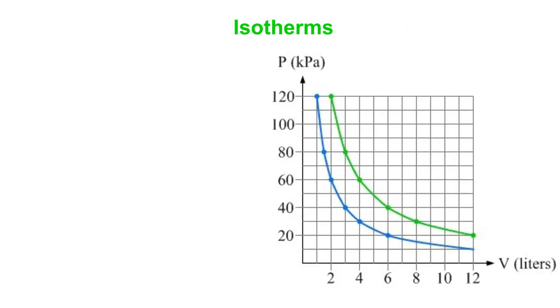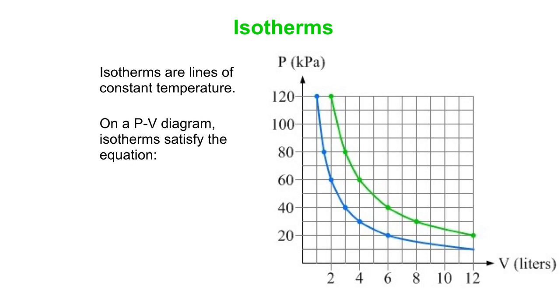And now we've got these funny curves drawn on the PV diagram. These are known as isotherms. These are lines of constant temperature. They're lines of constant P times V. In other words, P times V is constant.